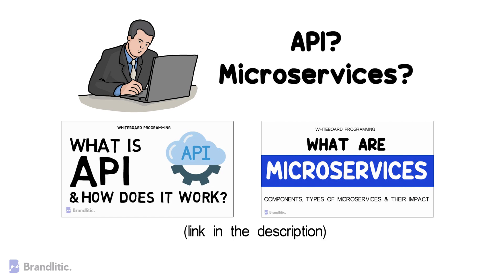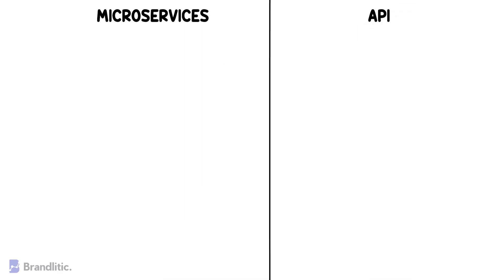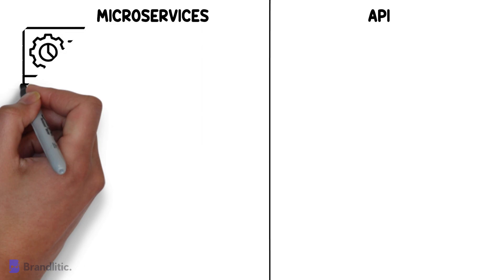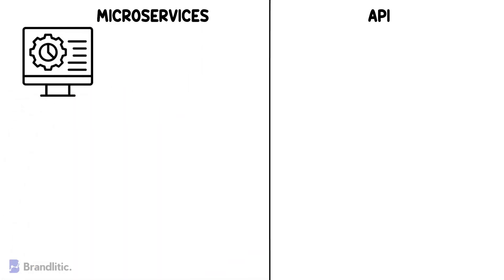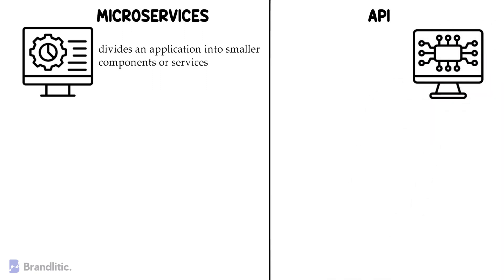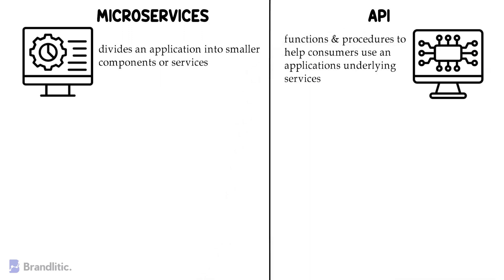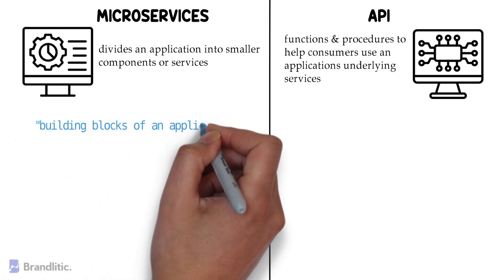Without any delay, let's compare microservices versus API on different grounds. Number one: in a nutshell, microservices architecture is a software development model that divides an application into smaller components or services. On the other hand, an API is an interface or intermediary between two applications communicating with one another. Number two: microservices are called the building blocks of an application.